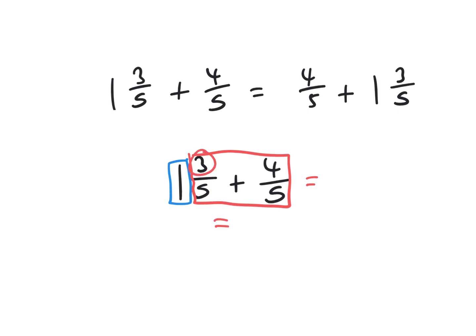Let's add the two fractions together. So we end up with 3 fifths add 4 fifths which is 7 fifths. Now we can't use 7 fifths in our answer so we're going to need to convert from the improper fraction into a mixed number.